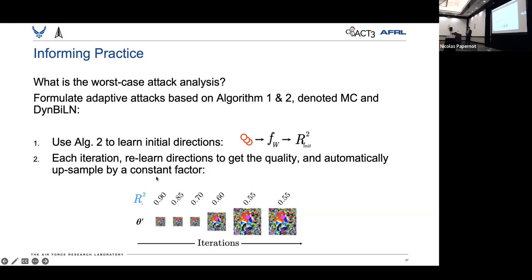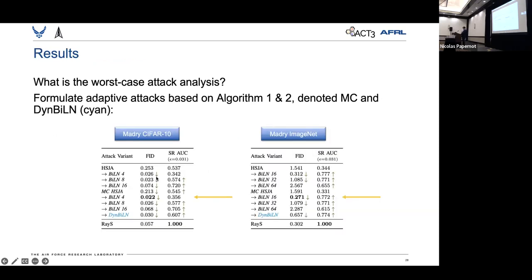When we apply this style of attack, we actually found that we can achieve a much lower FID score, while actually balancing the success rate. So we can make the best of both worlds, and increase the success rate, and lower the FID score, which means we can find a higher concentration of on-manifold adversarial examples than the state-of-the-art which would be RayS.